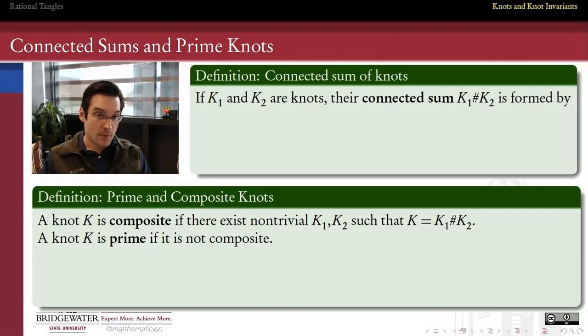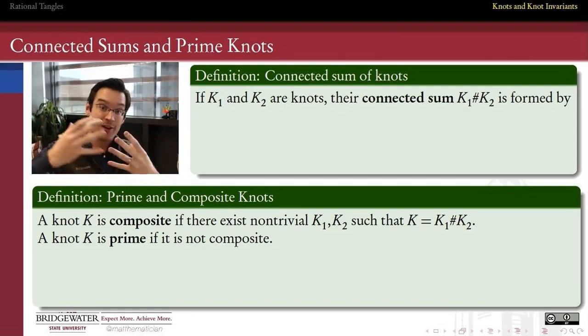Much like with numbers, where the concept of a prime number is a number that we can't break apart into multiplicative pieces unless one of those pieces is the multiplicative unit, the number one, prime knots are going to be knots which we can't decompose in any way that's meaningful without one of those pieces that we decompose it into being trivial. And for us, trivial means the unknot, the knot which is not knotted. So a prime knot is going to be a knot which we cannot express as the combination of two knots unless one or the other of those knots is the unknot.